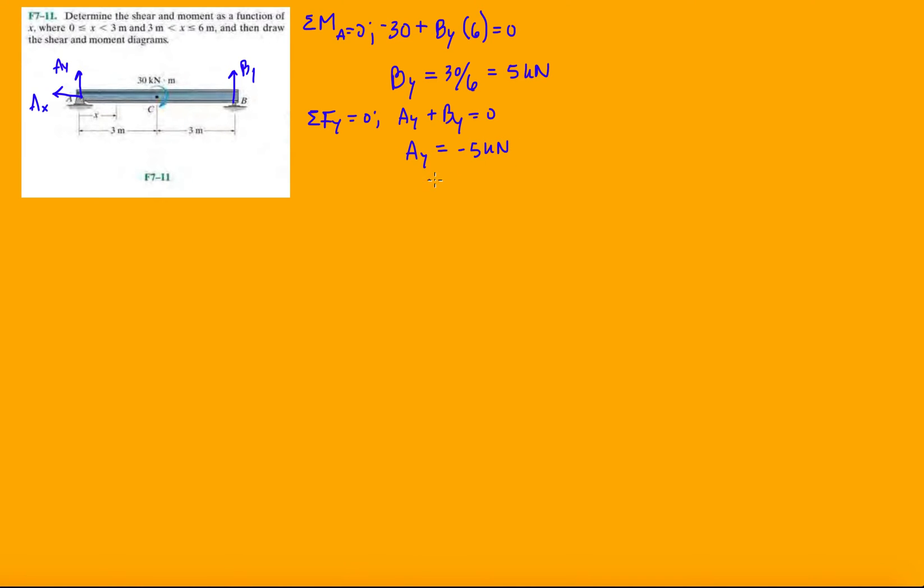And that's it, so we know Ay is actually going down. And just so here, they're kind of cheating, they're telling you to take the cuts between 0 and 3 and between 3 and 6. Most of the time I don't tell you where to take the cuts, it's up to you.